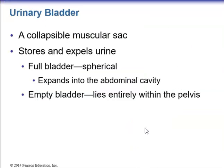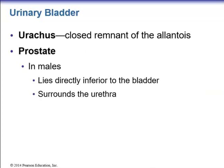The urinary bladder is a collapsible muscular sac that stores and expels urine. When full, it becomes spherical and expands into the abdominal cavity; when empty, it lies entirely within the pelvis. At the apex of the bladder is a fibrous band called the urachus — a closed remnant of the embryonic allantois, which was the urinary canal of the fetus. In males, the prostate gland lies directly inferior to the bladder, surrounding the part of the urethra that immediately exits the bladder.